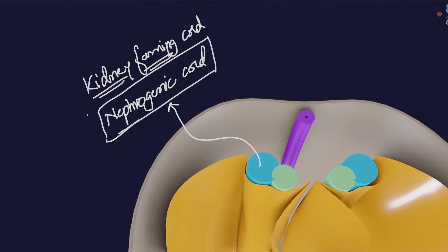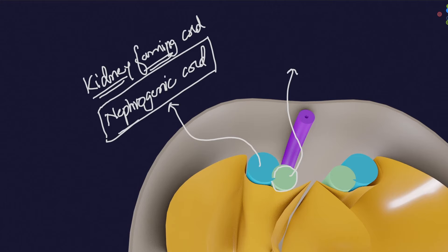The other chord-like structure is mainly involved in the formation of gonads — the genital system. So it is called the genital chord or gonadal chord.